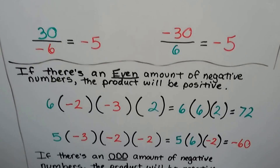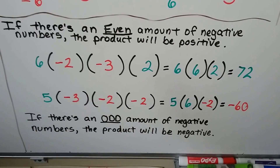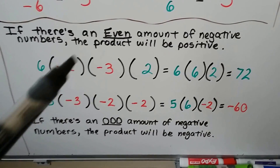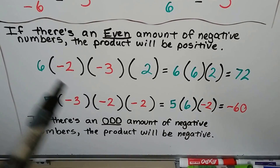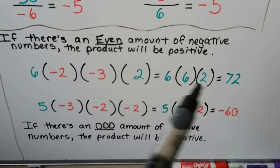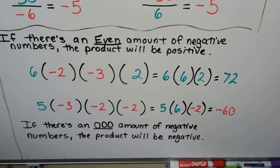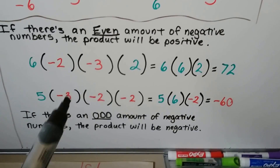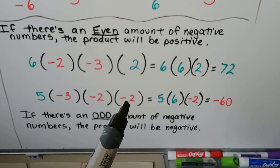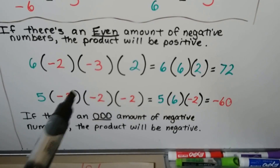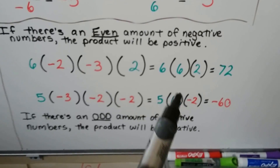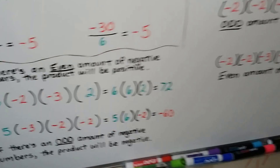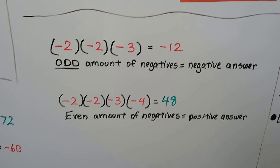If there's an even amount of negative numbers, the product will be positive. Because when you have like signs, they make a positive. So negative 2 and negative 3 pair up together to make a positive 6. Now we have 6 times positive 6 times 2, which is a positive 72. When there's an odd amount of negative numbers, the product is going to be negative. These two pair up to make a positive and leave one all by itself. So we have 5 times positive 6 times negative 2, which is positive 30 times negative 2 — they're unlike, so we have a negative answer.